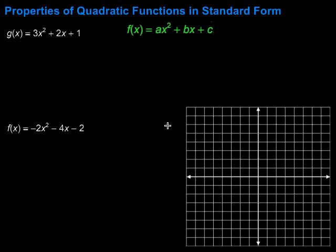In this video, we're going to take a look at some properties of quadratic functions in standard form. Standard form of a quadratic function is f of x equals ax squared plus bx plus c. If we can look at a function in that form, we can pick out some properties, and that can help us as we try to graph it.